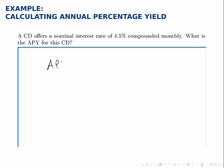The formula is that the annual percentage yield, or the effective interest rate, is equal to, in parentheses, 1 plus r over n, raised to the power of n, minus 1.